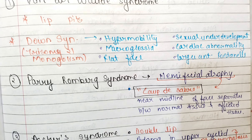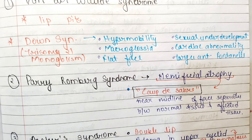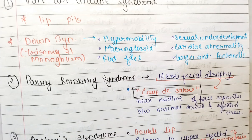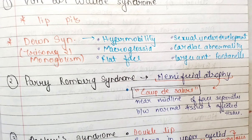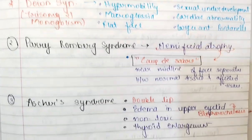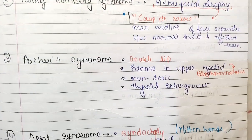Coming to the third syndrome — Parry-Romberg syndrome, which equals hemifacial atrophy. The affected side of the person's face is atrophied, as you can see in the picture, while the other side is normal. This sign is also known as 'coup de sabre,' where near the midline of the face there is a separation between normal tissue and the affected tissue.